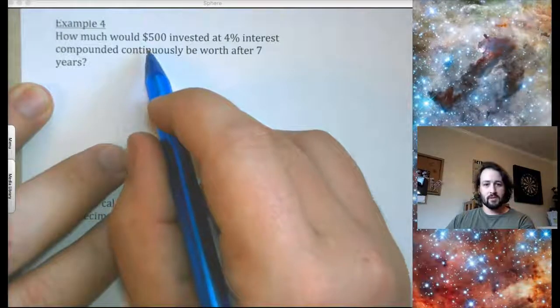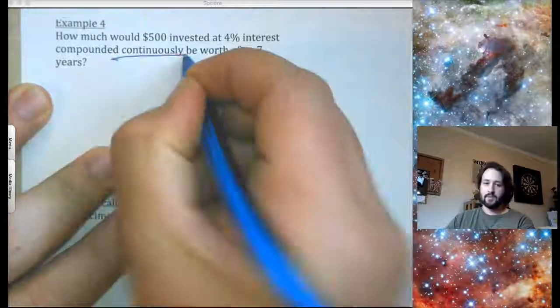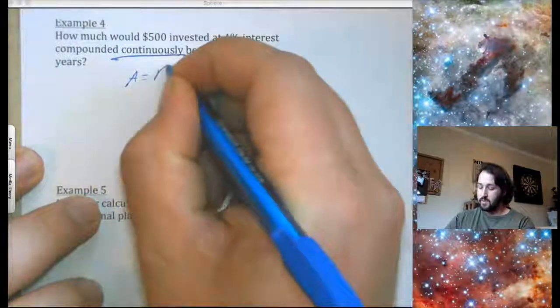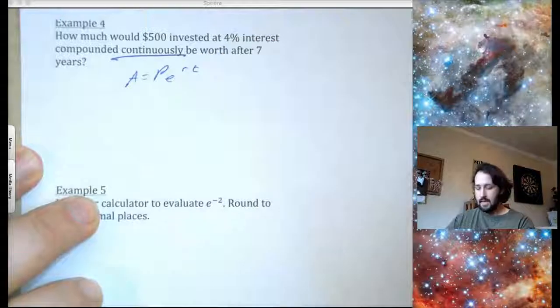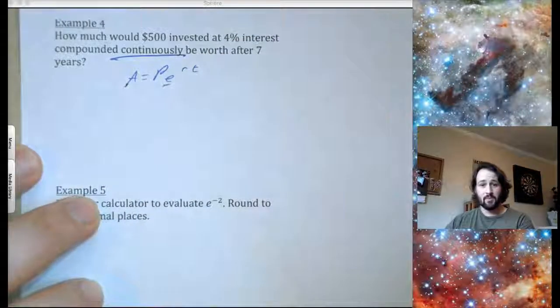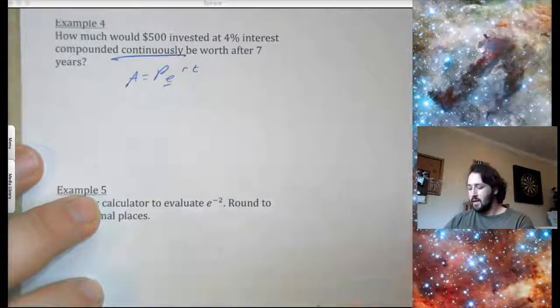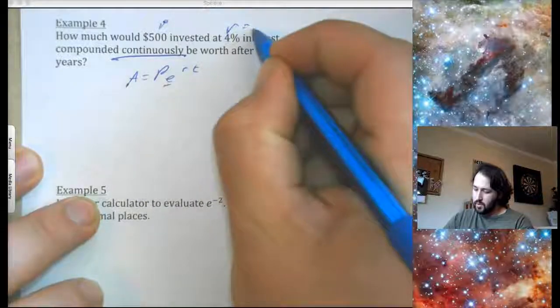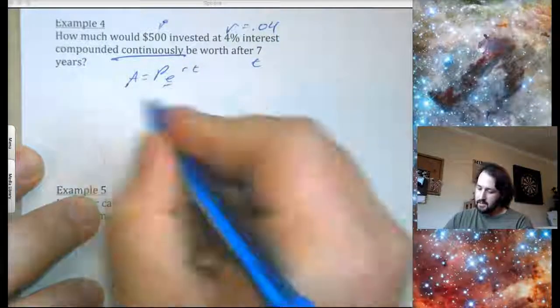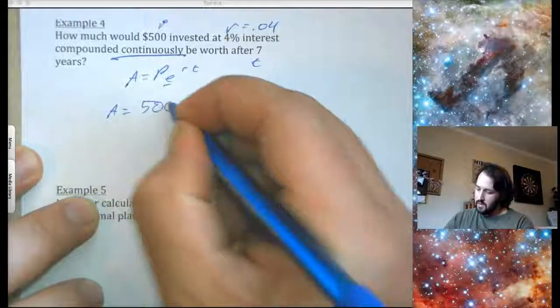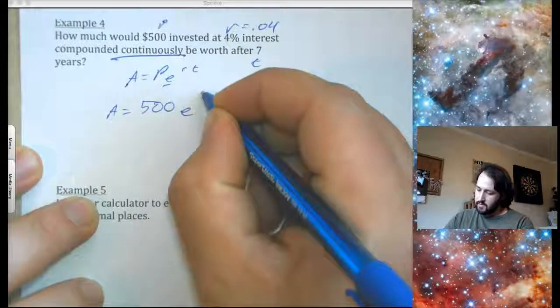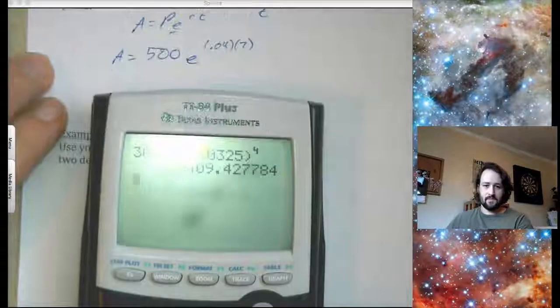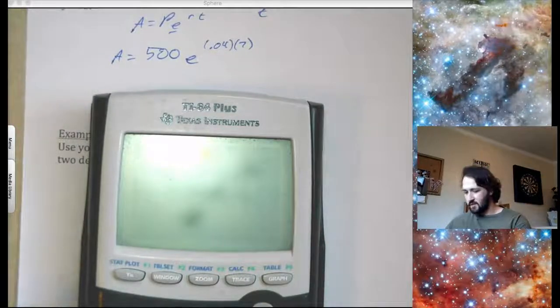All right. How much would $500 at 4% interest compounded continuously? So notice it says continuously. So that's when I'm going to use the PE to the RT. So this will be my formula, PE to the RT. And it's going to have that E involved. Remember, E is approximately 2.7182, I believe. So 500, my principle, there's my rate, 0.04, T is time. So A equals 500, E to the R, 0.04 times T. So here's how I entered that stuff. All right. 500.